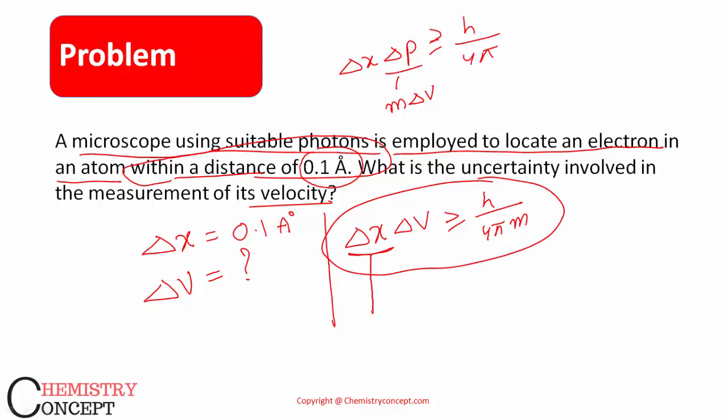Now, del x is given as 0.1 angstrom, it is better to write it into meter, 0.1 into 10 power minus 10 meter. We know the value of pi, we know the value of h and mass of electron is also constant or fixed. So if we put all these values, then we can solve it for the value of del v, that is uncertainty in velocity.